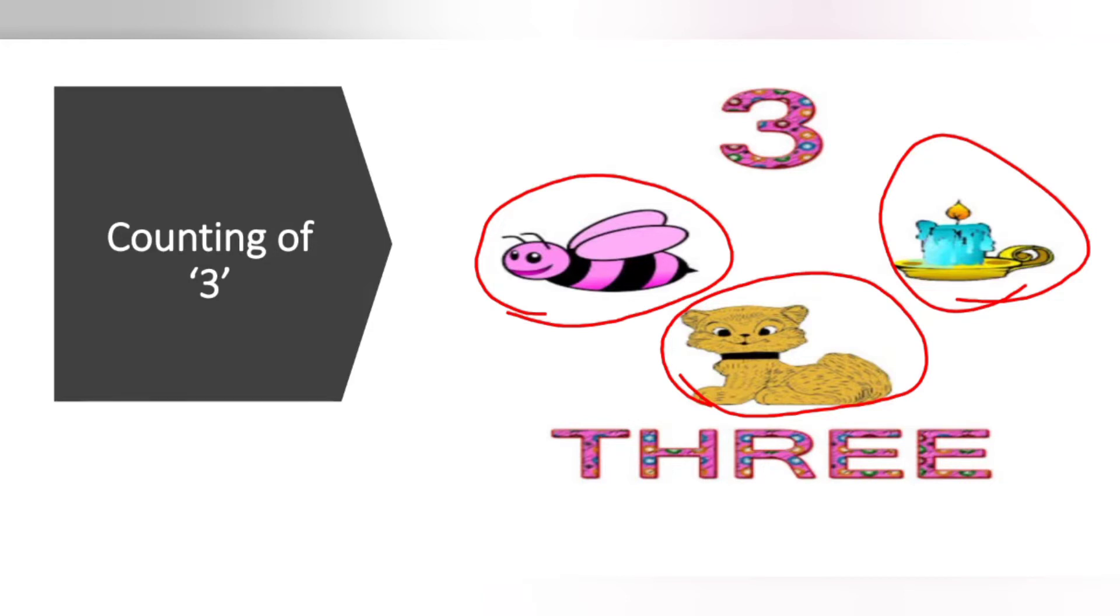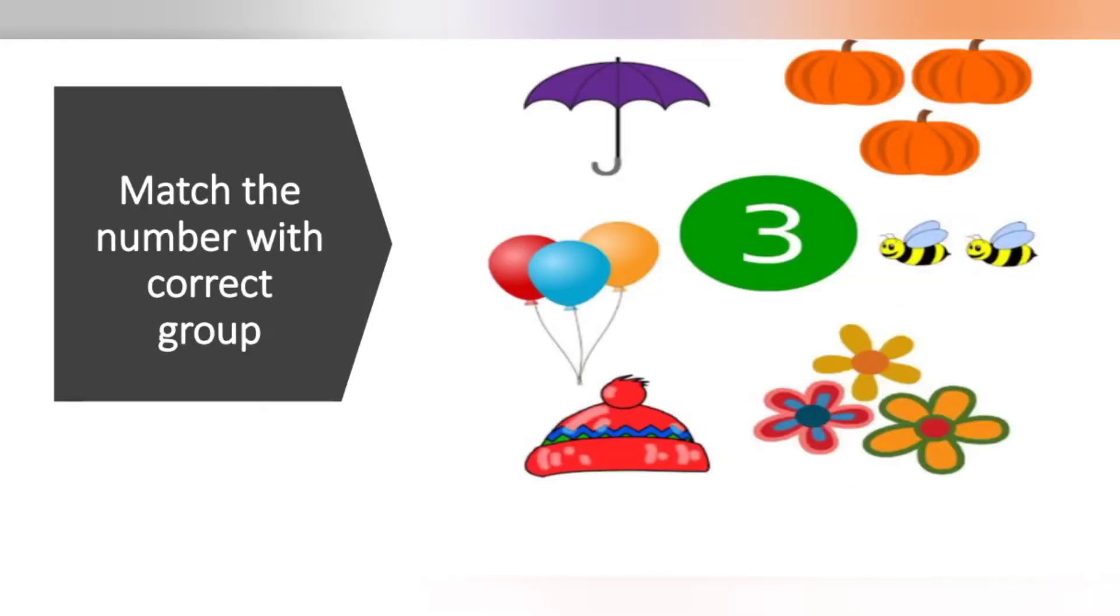Match the number with the correct group. So first one, here is the umbrella - only 1 is there. Next, pumpkins: 1, 2, 3. Correct, so this is 3. We match them.